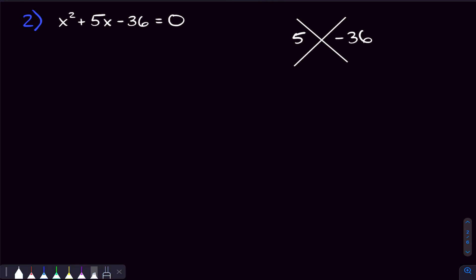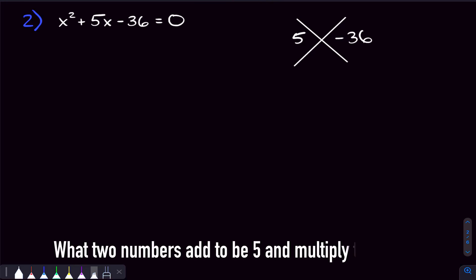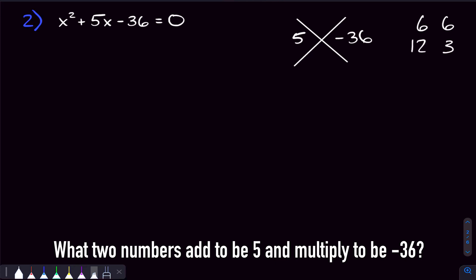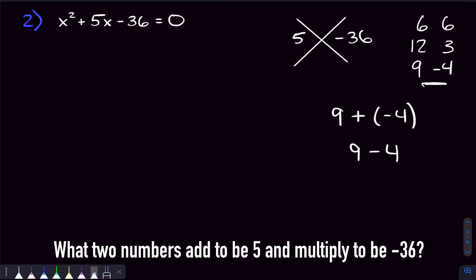In this case, we're trying to find two numbers that add to be five and multiply to be negative 36. Numbers that multiply to 36 include six times six and 12 times three, but I don't see how we can get five from those. Nine and four also multiply to 36, and if we make the four negative, nine plus negative four equals five, and nine times negative four equals negative 36. So those are our two numbers.